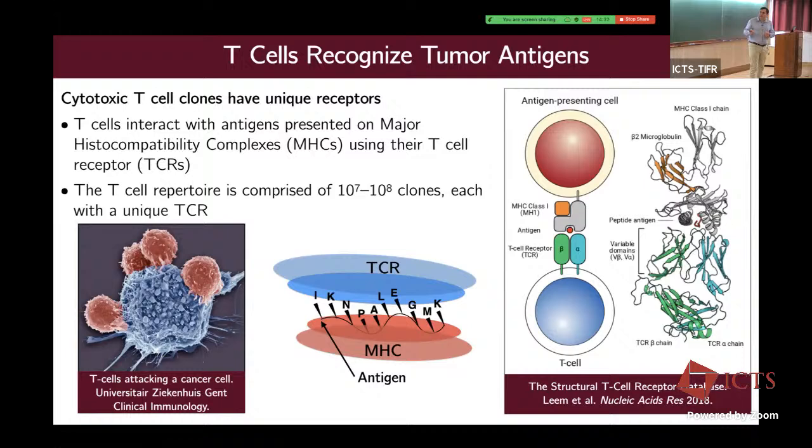Here's a beautiful example — an electron microscopy image of a cancer cell being attacked by four T cells. Presumably the T cells are recognizing tumor-associated antigens and sending killing signals to this tumor population, hopefully killing the cell.